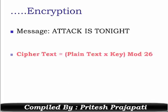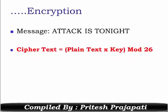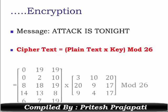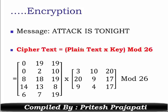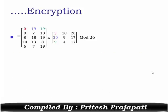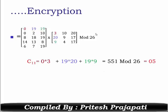The equation for ciphertext is plaintext into key mod 26. The plaintext equals this matrix and key equals this matrix, mod 26. This is a standard matrix multiplication operation. You will get C(1,1) equal to 0 into 3 plus 19 into 20 plus 19 into 9, giving 551. Now you have to perform mod 26, giving 05.